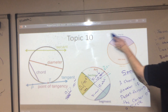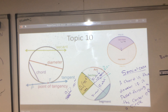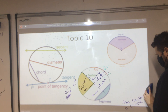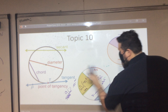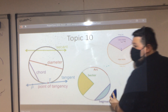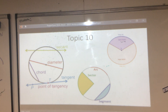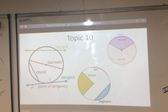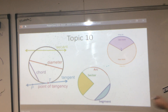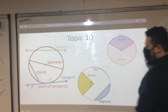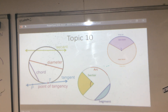Let's get to the last one. Does anybody know what kind of angle we have right here? What's the name of that angle? It's a special type of angle. Abby — central angle. How did you know it was a central angle? The vertex is in the middle.